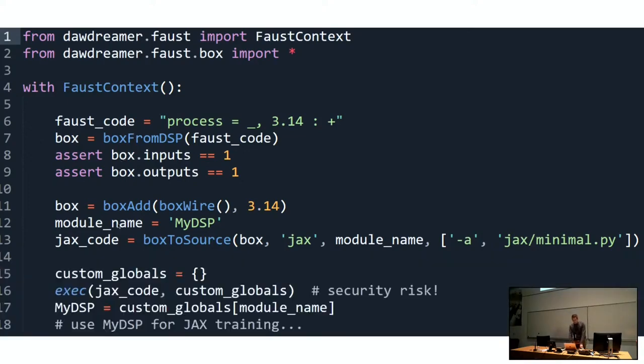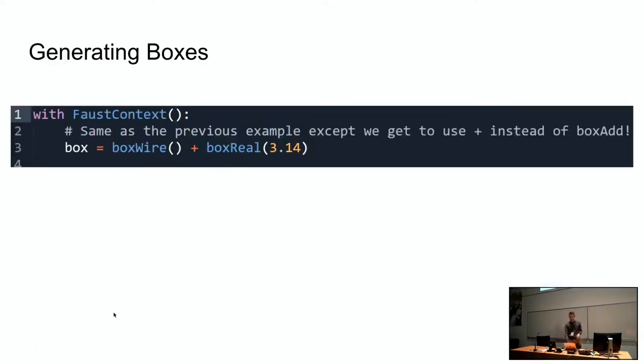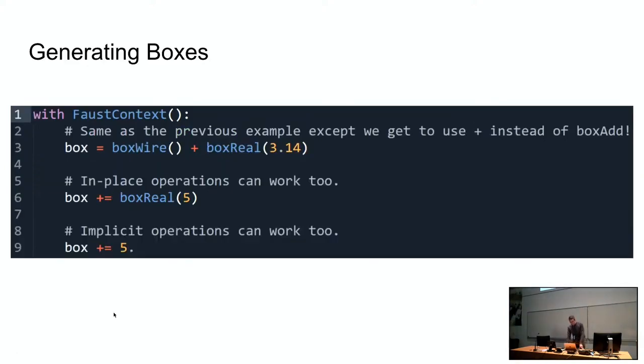So, as I said earlier, once we have our Jax code, which is Python code, we can actually execute that in the global scope in Python, which is a little bit of a security risk, but you just have to trust me or whoever else that the Jax code that you've generated is safe, and you can extract the class from the global namespace, and then you can use that just as if you had written class mydsp and so on, and defined it like a regular class. So, this is the technique of generating boxes.